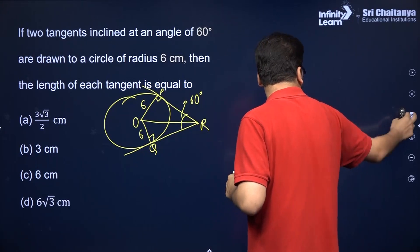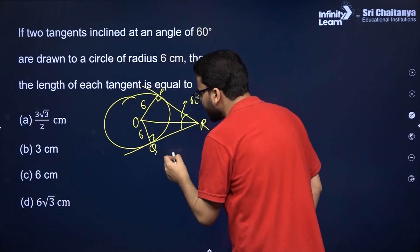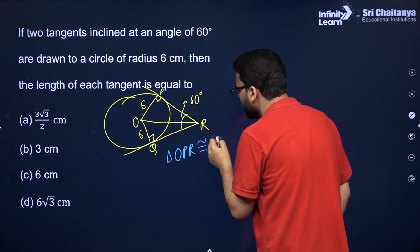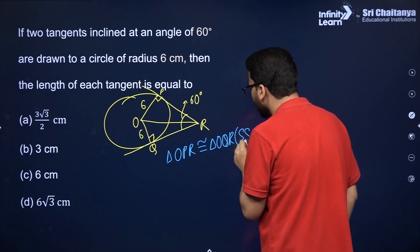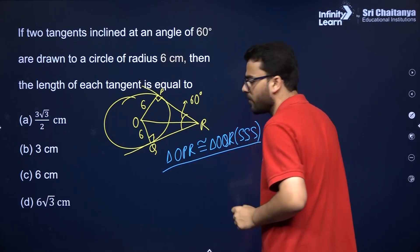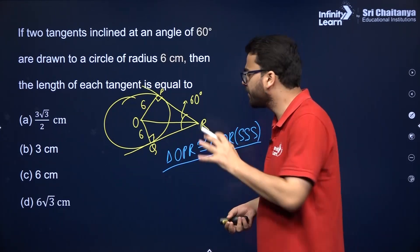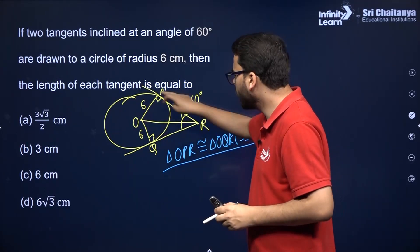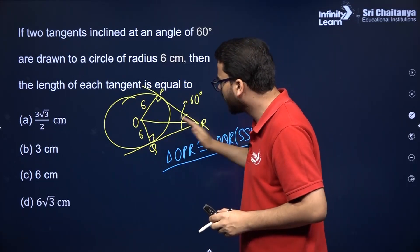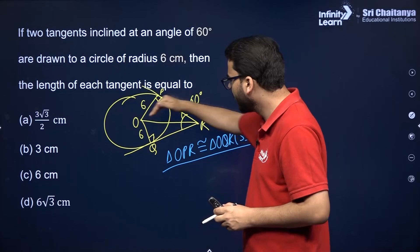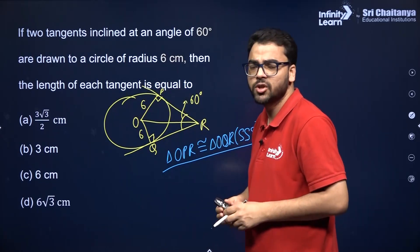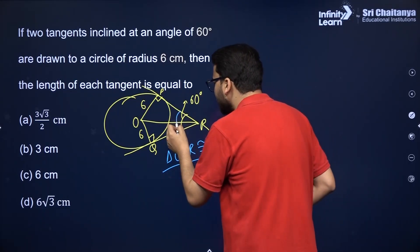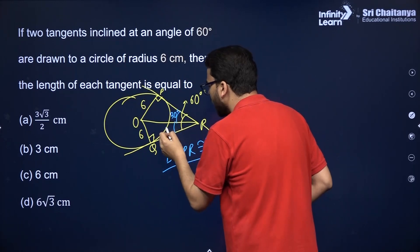Triangle OPR is congruent to triangle OQR by SSS or RHS congruency, because the tangent lengths from R are equal, OR is common, and OP and OQ are equal radii. Since the total angle at R is 60 degrees, each half is 30 degrees. So the angle at R in triangle OPR is 30 degrees.